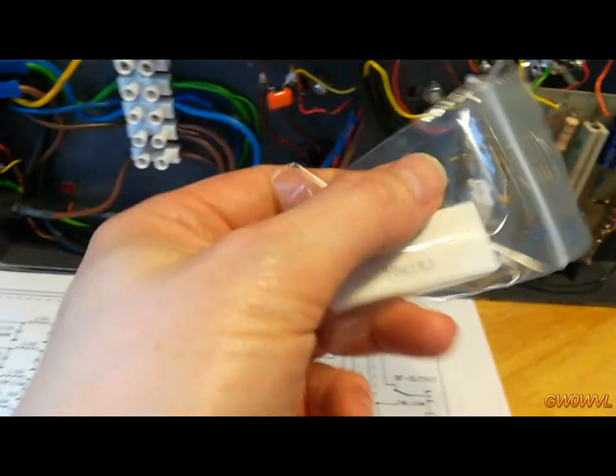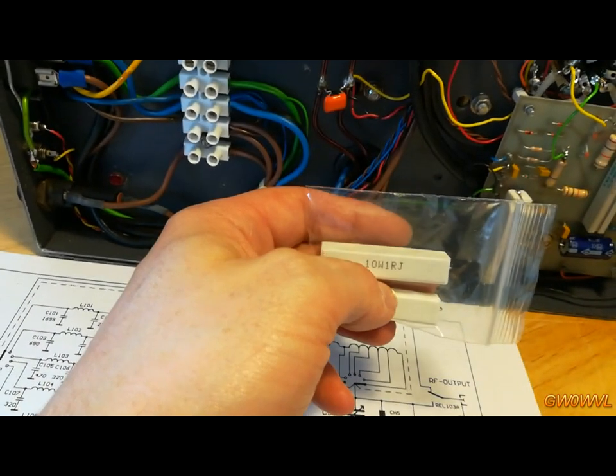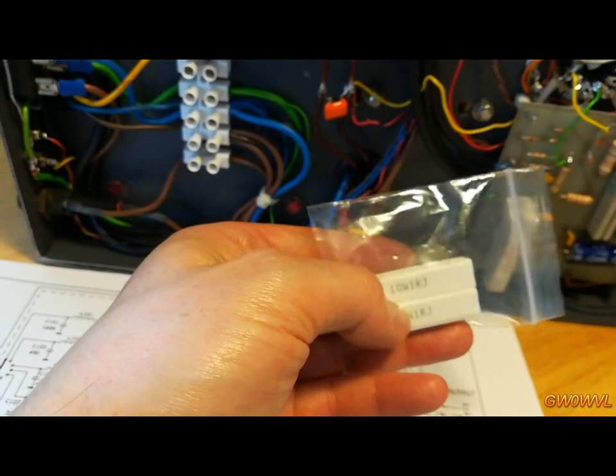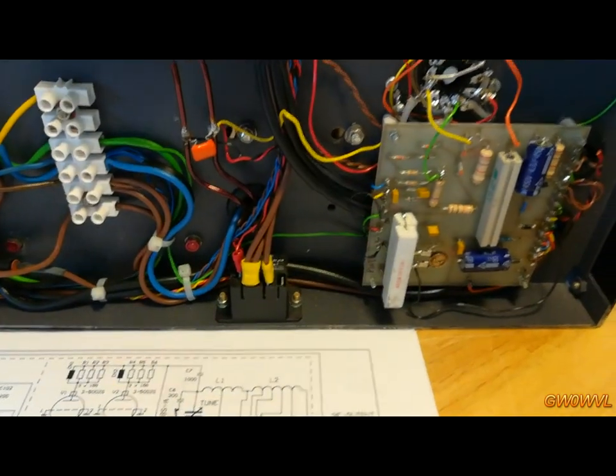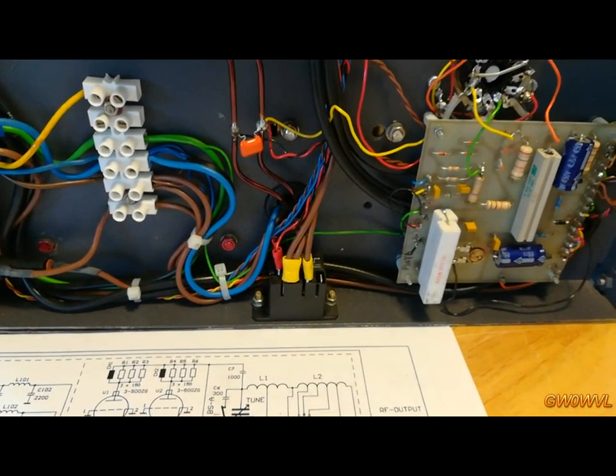So good old eBay again. I bought some one ohm resistors. I bought two, I only need one. The other one I'll use as a spare. So I'll pop that in a bit, and the amplifier is basically up and running again.